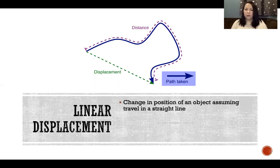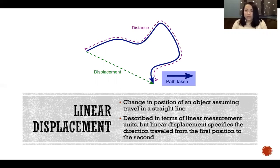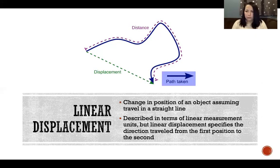Linear displacement is the green dotted line — a change in position of an object assuming travel in a straight line, described in linear measurement units, but it specifies the direction traveled from the first position to the second. So if I walk out my front door, go for a three-mile walk, and end at a location one mile east of my house, the three-mile walk is the linear distance traveled, and one mile east is the linear displacement — the difference between my starting and ending position, specifying both the distance and direction.